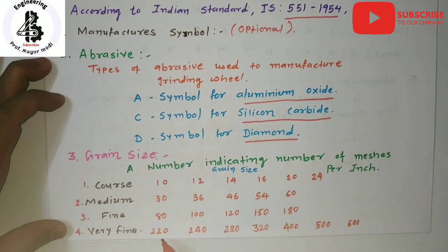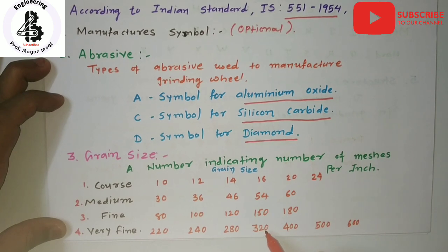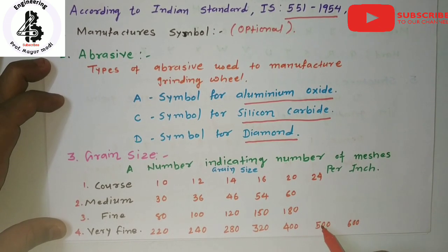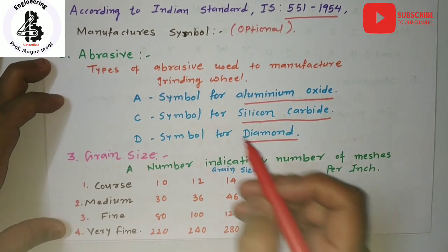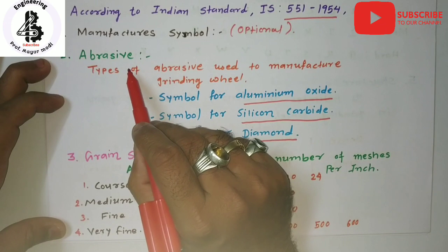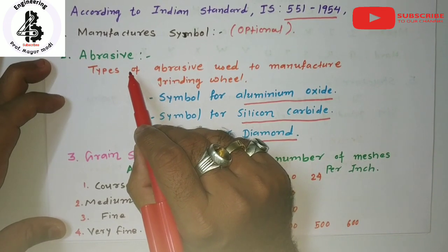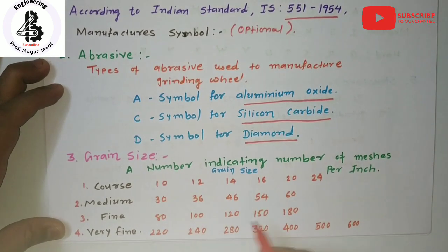For very fine grain size, the numbers are 220, 240, 280, 320, 400, 500, and 600. So those are the first three indicators: manufacturer's symbol, abrasives used for making grinding wheels, and grain size.